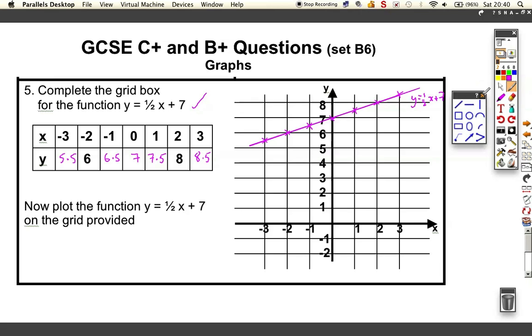Now just an extra point on this. All these graphs follow the format y equals mx plus c, where this number before the x is the gradient, and this c is what we call the y-intercept. Our function was given a half x plus 7. That means it's got a gradient of half. It goes up every one square along, it goes half square up. Along one, up a half. Along one, up a half. That's the gradient. And the y-intercept is where it crosses the y-axis: 7.